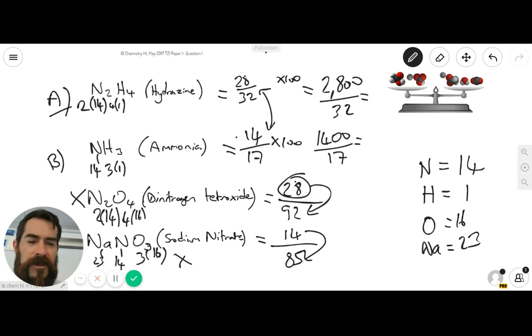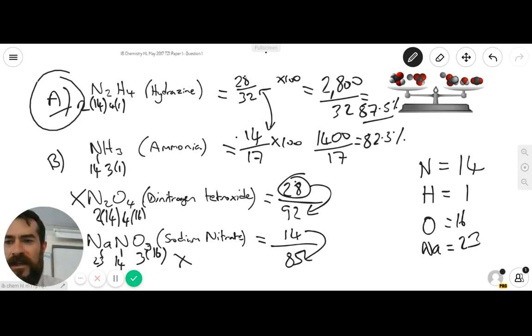If you divide those two numbers, for the first one, you'll get 87.5%. And for the second answer, you'll get 82.3%. So we've identified at this stage that the answer is A, just slightly more percentage by mass of nitrogen in compound A.